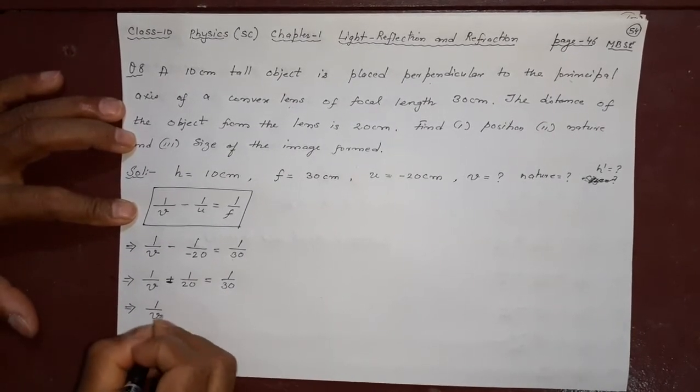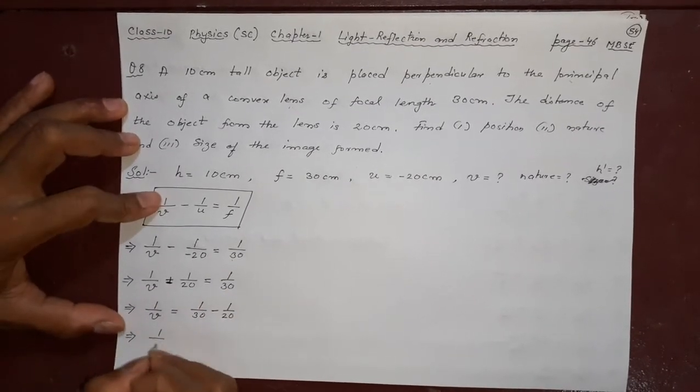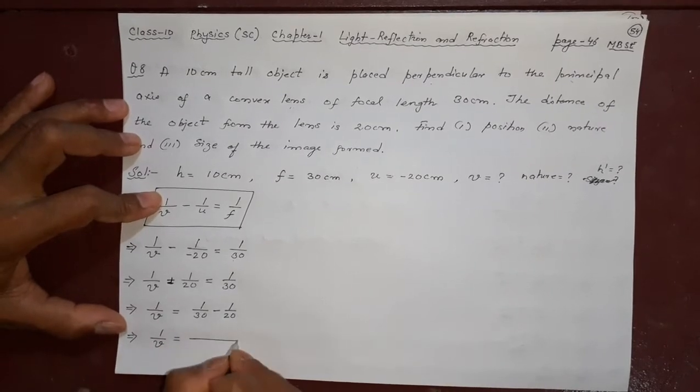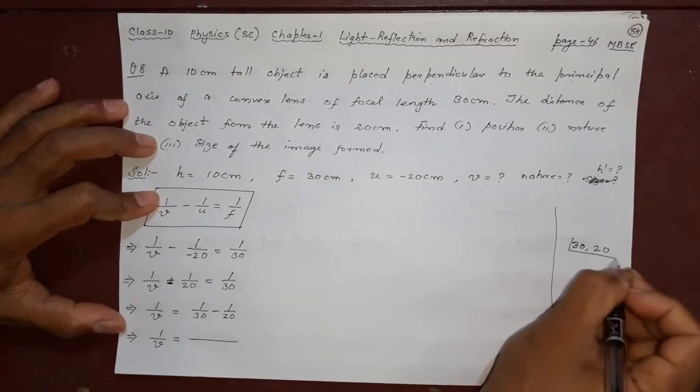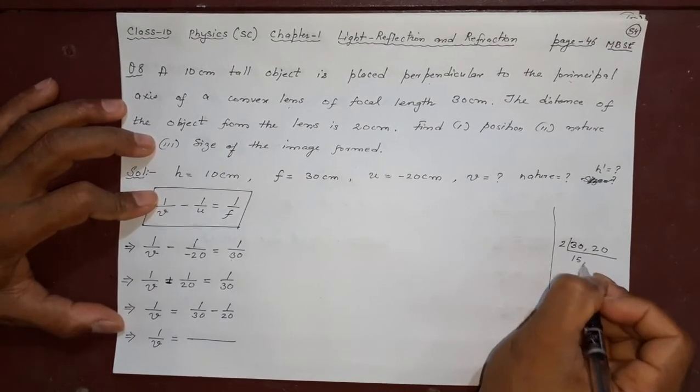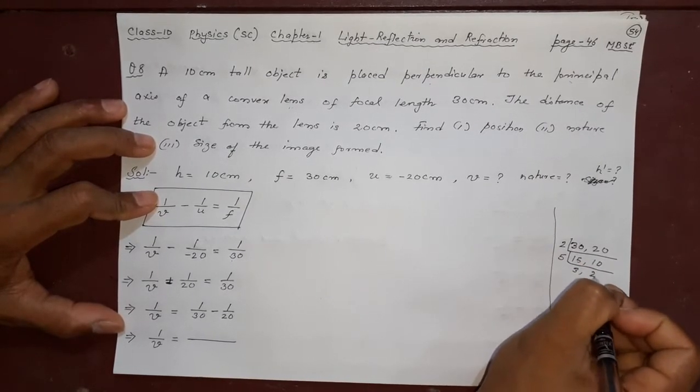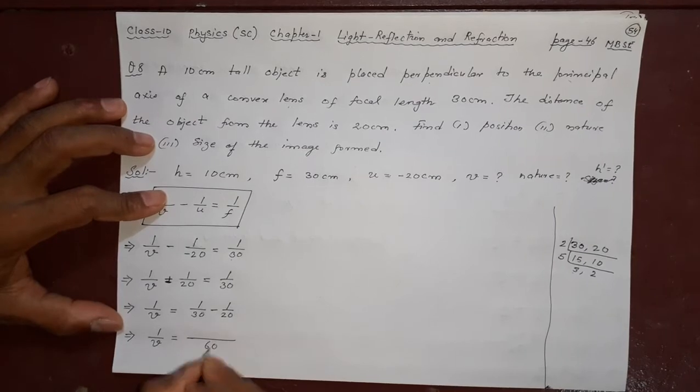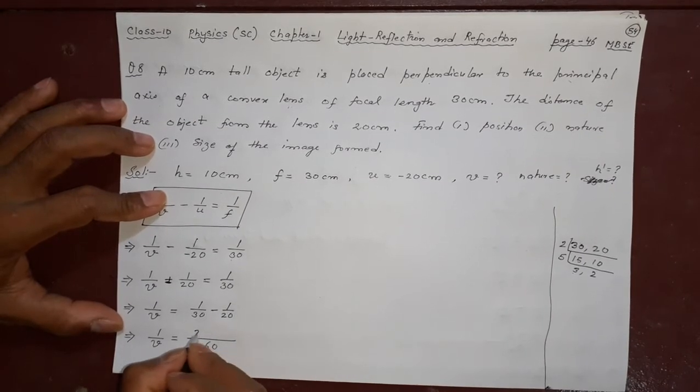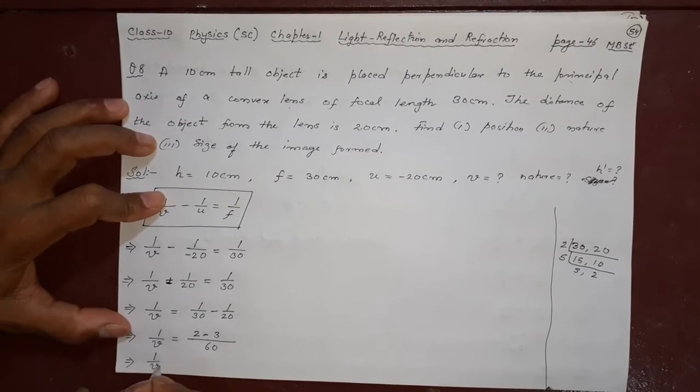Now this will go on the right side: 1 by 30 minus 1 by 20. 1 by v equal to, this LCM of 30 and 20, what will be that. 30 and 20 LCM: 2, 15s are, 2, 10s are, 5 common multiple, 5, 3s are, 5, 2s are, now finish. 2, 5s are 10, 10, 3s are 30, 3, 2s are 60 is the LCM. So what is this, 1 by v is equal to minus 1 by 60.